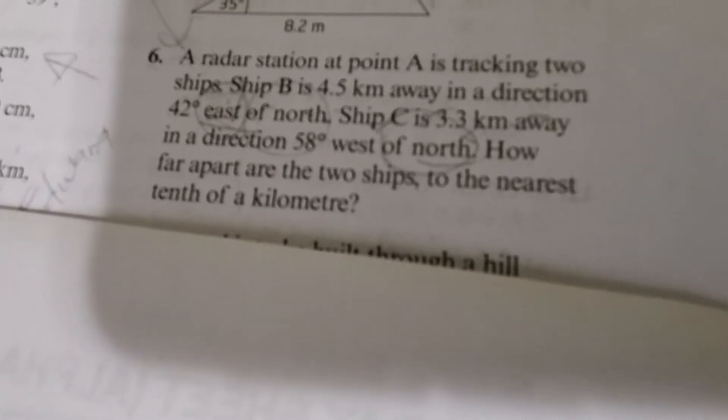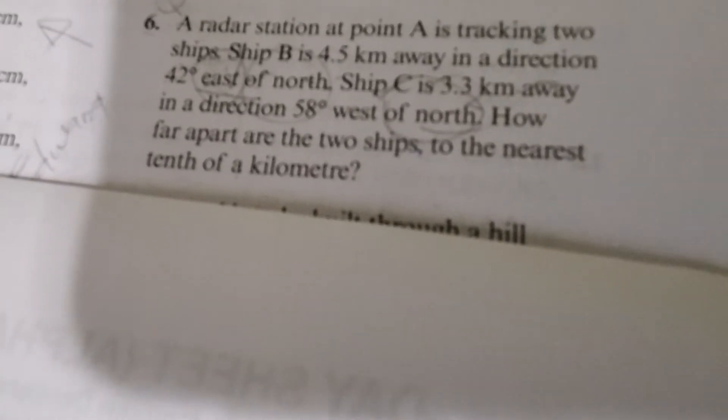Question 6. A radar station at point A is tracking two ships. Ship B is 4.5 kilometers away in a direction 42 degrees east of north. Ship C is 3.3 kilometers away in a direction 58 degrees west of north. How far apart are the two ships to the nearest tenth of a kilometer?